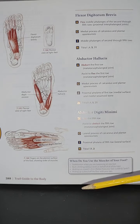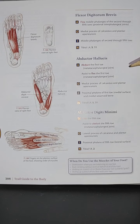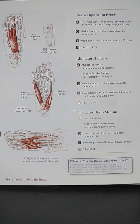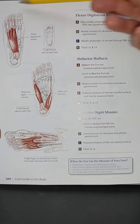We are at page 388 of Trail Guide to the Body. We're going to be featuring flexor digitorum brevis, abductor hallucis, and abductor digiti minimi. You use these muscles of your foot when you're stabilizing, balancing on one foot, rock climbing, walking on a patch of ice — notice how your toes suddenly grab — or picking up a pencil off the floor with your toes.